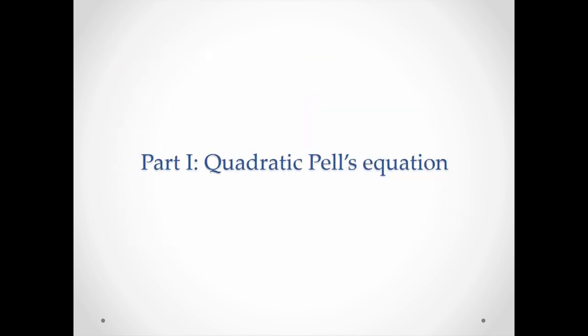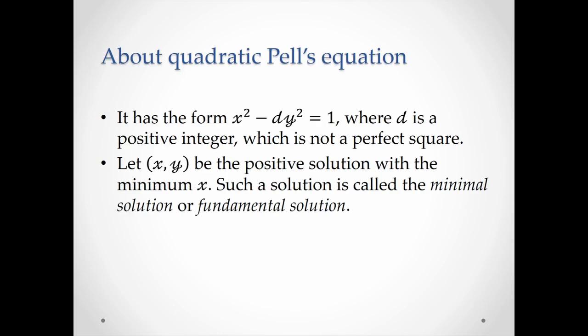Then let's talk about quadratic Pell's equation. A quadratic Pell's equation has the form like this, where d is a positive integer and is not a perfect square. For a positive solution pair (x, y) with minimum x, we call this solution a minimal solution or a fundamental solution.